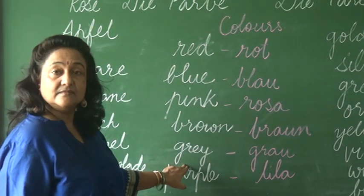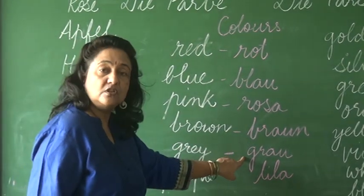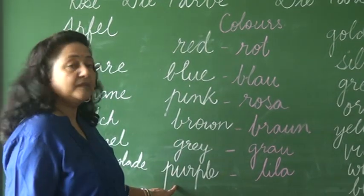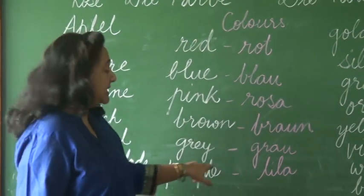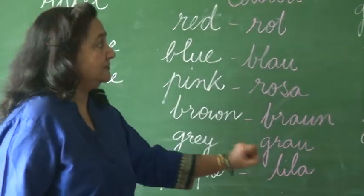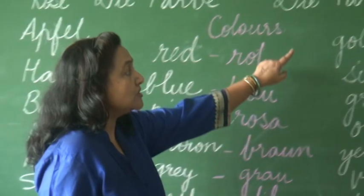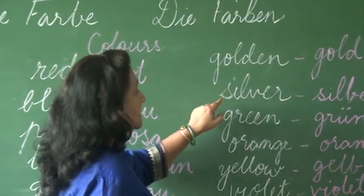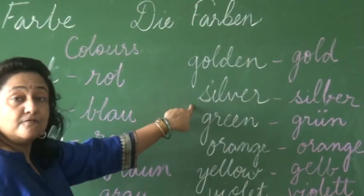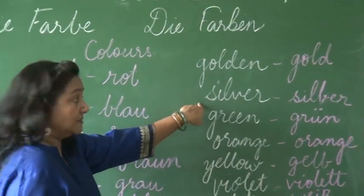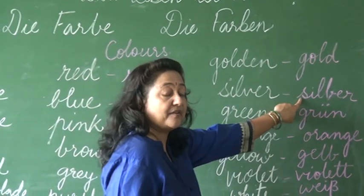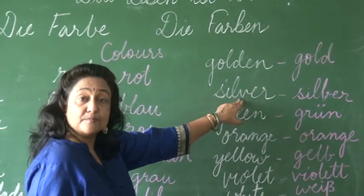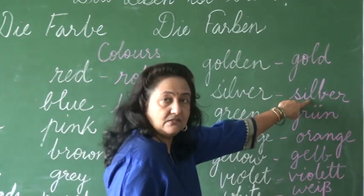Grey is Grau. Purple is Lila. Golden is Gold. Silver — mark the difference — Silver is Silber. The V has been replaced with B.